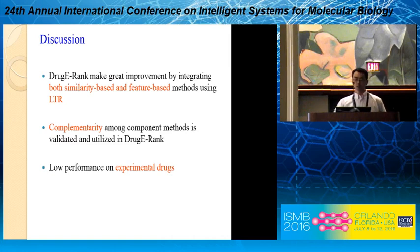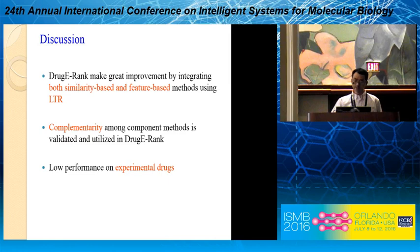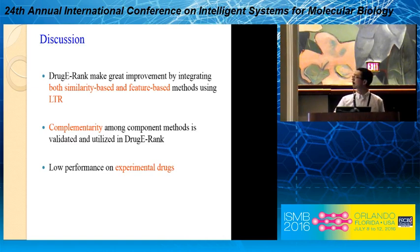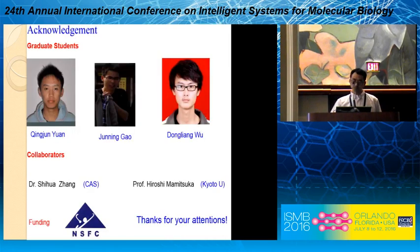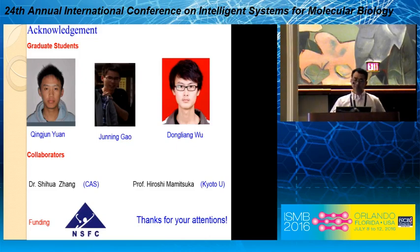Finally, we can say that drug E-rank makes great improvements by integrating both similarity-based and feature-based methods using learning-to-rank. There is a very large complementarity among component methods, which is validated and utilized in drug E-rank. We also found some very low performance on experimental drugs, which we think is because there are many unknown interactions in experimental drugs that are not yet discovered — they may be validated in the future. The work was mainly done by my graduate students, and I also want to thank my collaborator Dr. Su Huazang at the Chinese Academy of Sciences and Professor Mamitsuka at Kyoto University. Thank you for your attention.